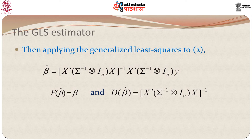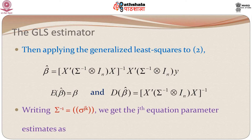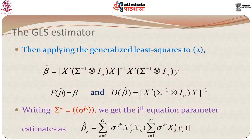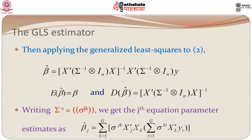Writing sigma inverse with superscript j k, we get the j-th equation parameter estimates as beta_j_hat, which are the elements picked up from the overall beta_hat. Specifically, beta_j_hat is given by the summation over k from 1 to g of sigma^{jk} x_j prime x_k times the corresponding summation term. So this gives us the individual betas for the individual equations.